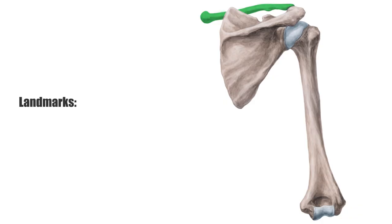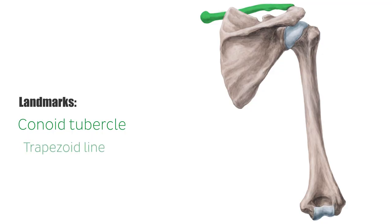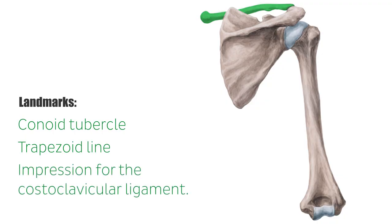Some of the landmarks of this bone are the prominences where ligaments attach to the bone. They are found on the inferior surface of the bone and include the conoid tubercle near the acromial end, the trapezoid line also on this end, and the impression for the costoclavicular ligament on the sternal end. The names of these bony prominences echo the ligaments that attach at these points.